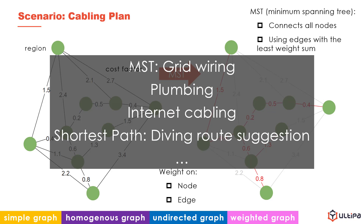With the weight given, we can calculate the MST for purposes of grid wiring, plumbing, internet cabling, and other occasions of subgraph extraction. We can also calculate the shortest path for making suggestions on a driving route, in which case the direction of edge — which may represent the direction of traffic — should also be considered.